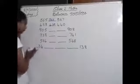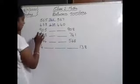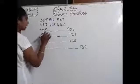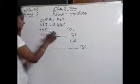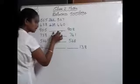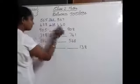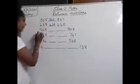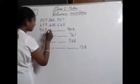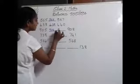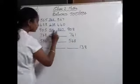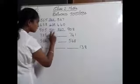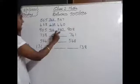Same method we have to do for all these numbers. Next: 905 blank blank 908. Here, between two dashes are given, so we have to write two numbers in between. After 905: 906, then 907, then 908. So the two numbers in between will be 906 and 907.